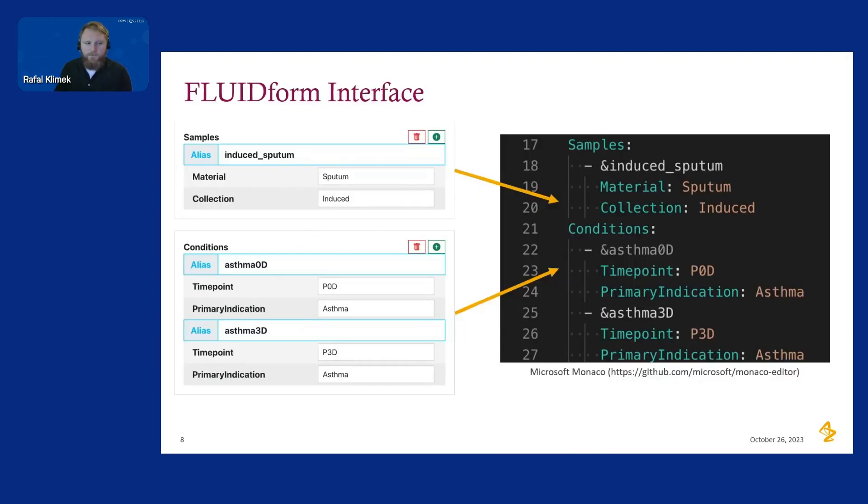This is the FLUIDform interface. As you can see here on the right we have two modes of operation in our application: the text editor and the sections of the dynamic form that are built upon it. YAML lets us create graphs, that's why we chose YAML and FLUIDform lets us create YAML.